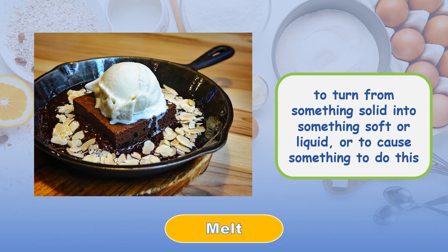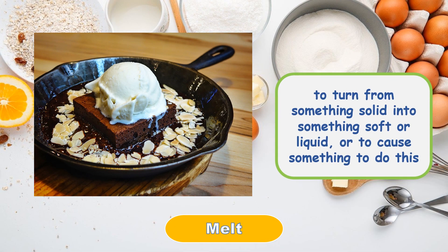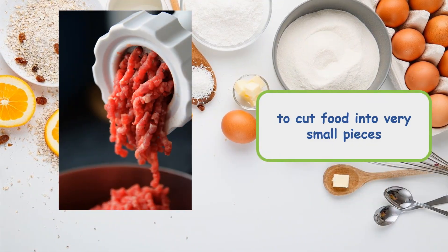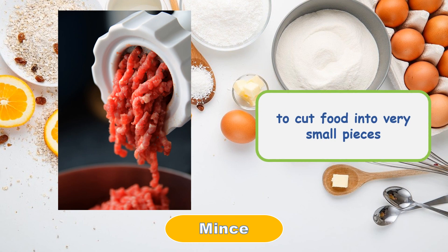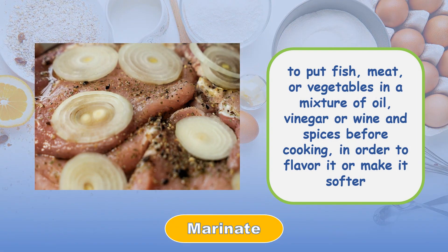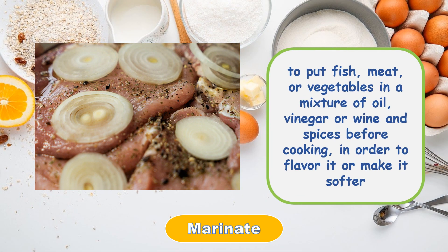Melt: to turn from something solid into something soft or liquid, or to cause something to do this. Mix: to cut food into very small pieces. Marinate: to put fish, meat, or vegetables in a mixture of oil, vinegar, or wine and spices before cooking, in order to flavor it or make it softer.